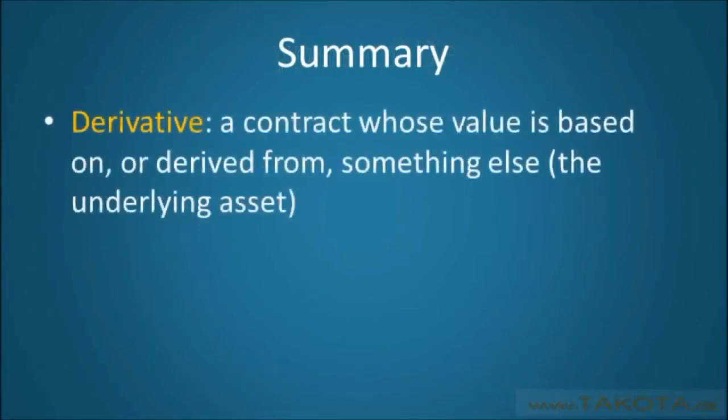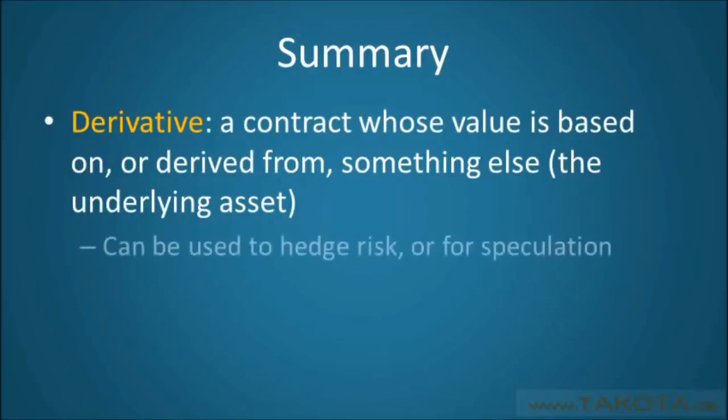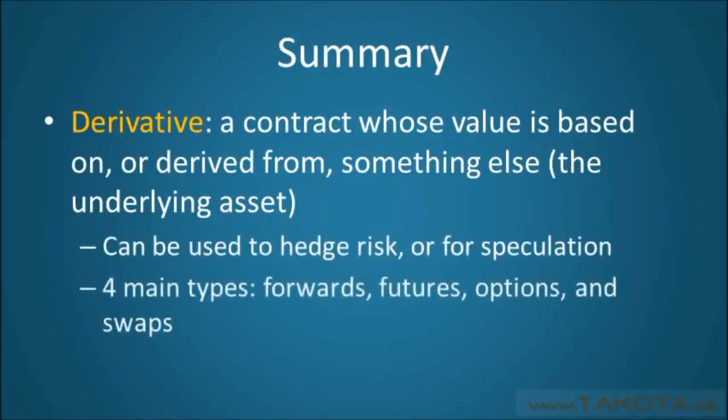So, we have seen that derivatives are contracts whose value is based on something else. We have seen that they can be used for either hedging or speculating, and we have briefly touched on the four main types.